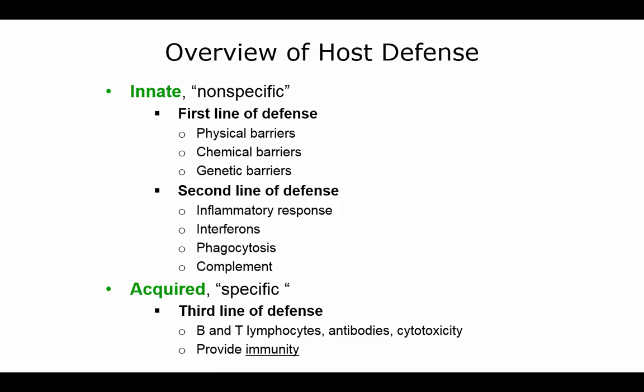There are two lines of innate defense. The first includes physical barriers like the keratin in your skin that most things can't penetrate, chemical barriers like antimicrobial sebaceous secretions, and genetic barriers — for example, someone who carries the sickle cell gene won't get malaria. The second line, also innate and non-specific, includes the inflammatory response, interferons, phagocytosis, and complement.